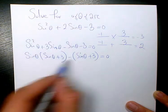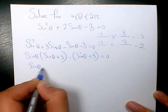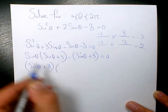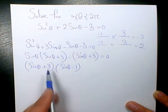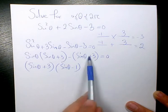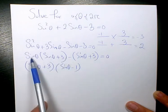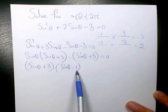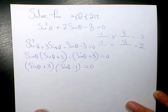Then we have factors sinθ + 3, and here we have sinθ - 1, because I factor sinθ + 3 from these two sides, and here I have sinθ - 1. Now it is in factored form. You need to solve it.